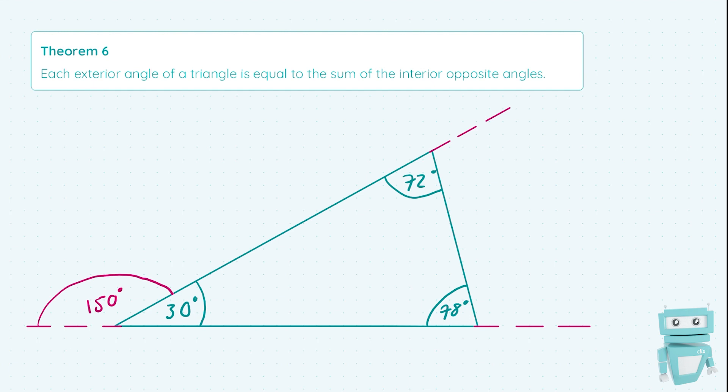But the thing to note here is that this is actually equal to the sum of the other two angles, so in this case 150 = 72 + 78.